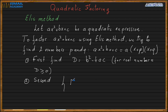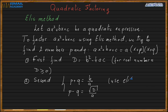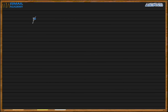The second step is to solve the system: p + q = b/a and p − q = √D/a. To solve this system, use elimination — it's easier. Add the first and second equations to get p, and subtract the first and second equations to get q. After you find p and q, substitute them back to get the answer.